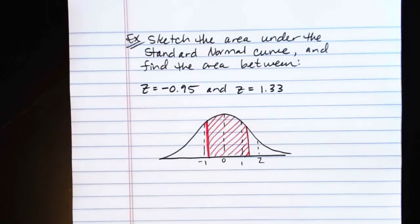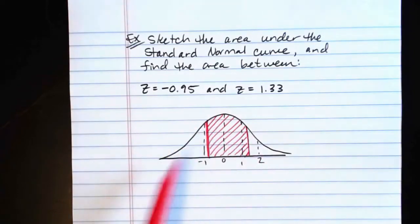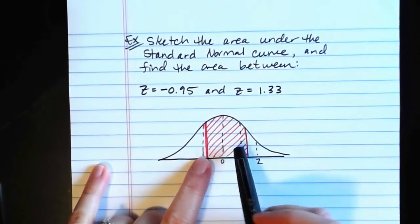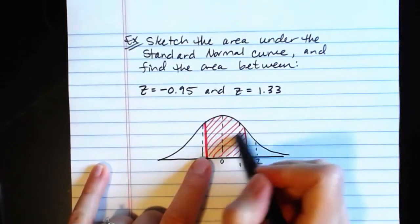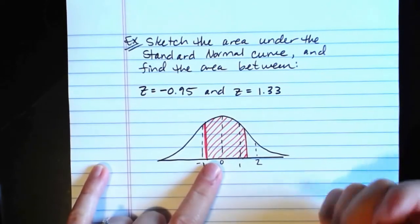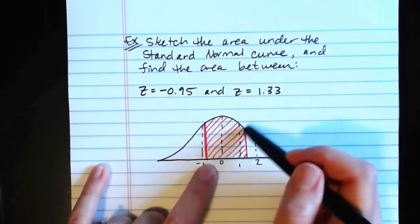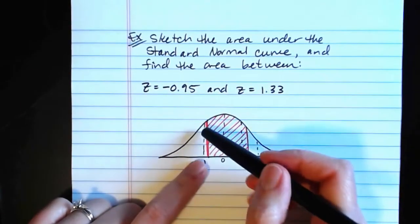Now we also want to find that area. What percentage is this? Well, one way we could do this would be to get an estimate using the empirical rule. We can get a rough estimate, but we can't get an exact value.